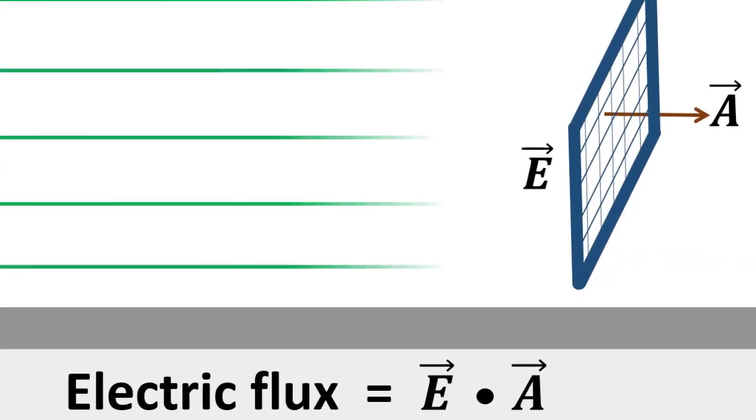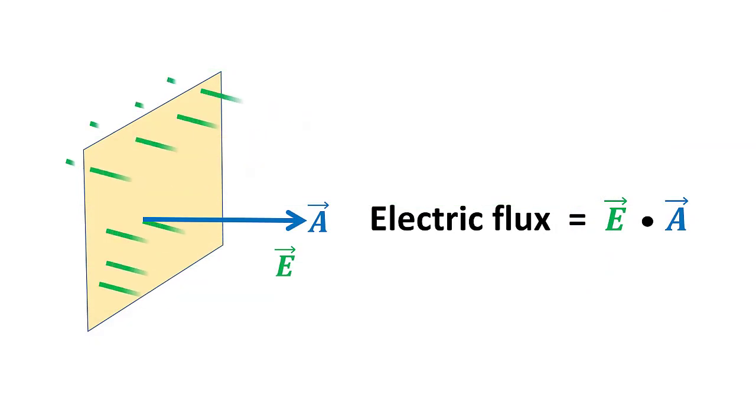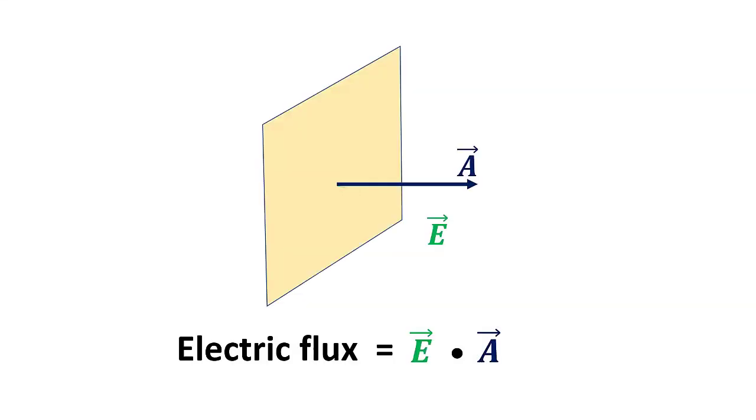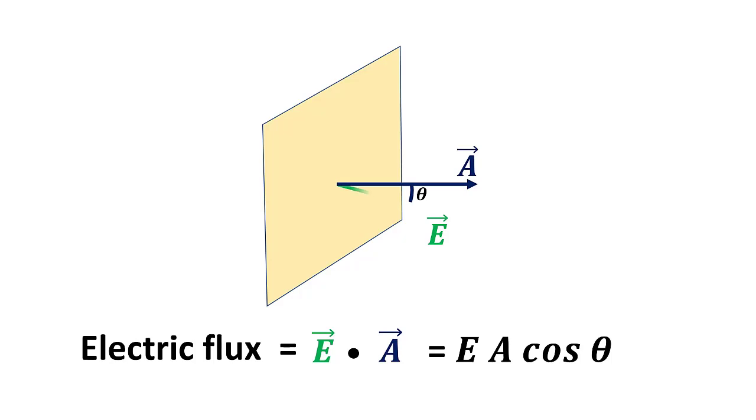Electric flux is the measure of distribution of electric field through a given surface. That is, the number of field lines that intersect is flux. It is represented by the vector E dot vector A or E A cos theta.